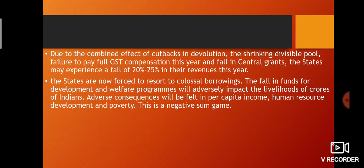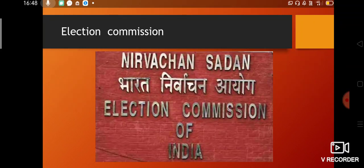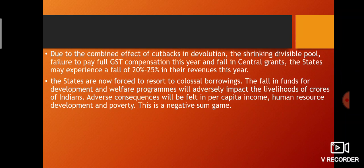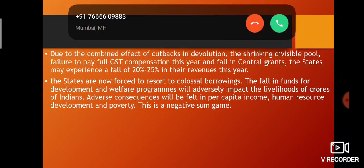Due to the combined effect of cutbacks in devolution, a shrinking divisible pool, and failure to pay full GST compensation, states may experience a shortfall of 20 to 25% in revenue. States are now forced to resort to colossal borrowings. The fall in funds for development and welfare programs will adversely impact livelihoods, per capita income, human resource development, and poverty — making this a negative-sum game.